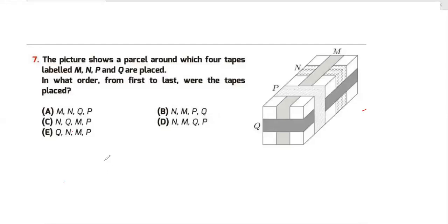Question 7: The picture shows a parcel around which four tapes labeled M, N, P, and Q were placed. In what order from first to last were the tapes placed? Looking at the overlaps: N is at the bottom since M, P, and Q all appear on top of it, so N was placed first. After N, we can see M underneath P and Q, so M was second. Then Q is under P, so Q was third and P was last. The order is N, M, Q, P — option B.